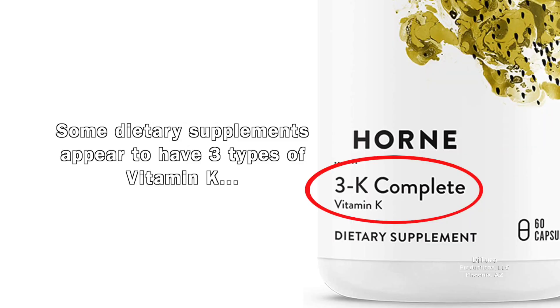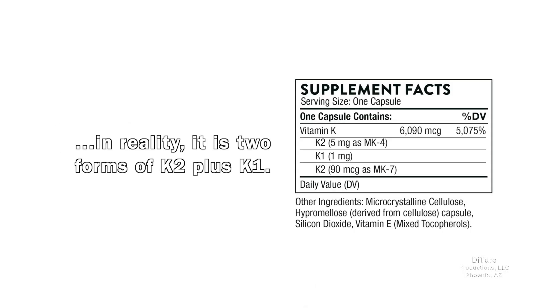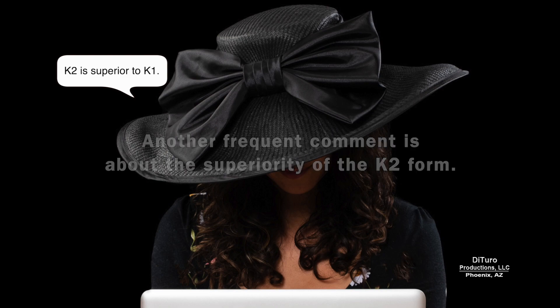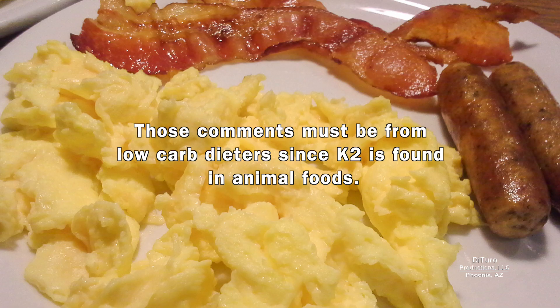Some dietary supplements appear to have three types of vitamin K. In reality, these supplements have two forms of K2 plus K1. Another frequent comment is about the superiority of the K2 form — those comments must be from low-carb dieters, since K2 is found in animal foods.